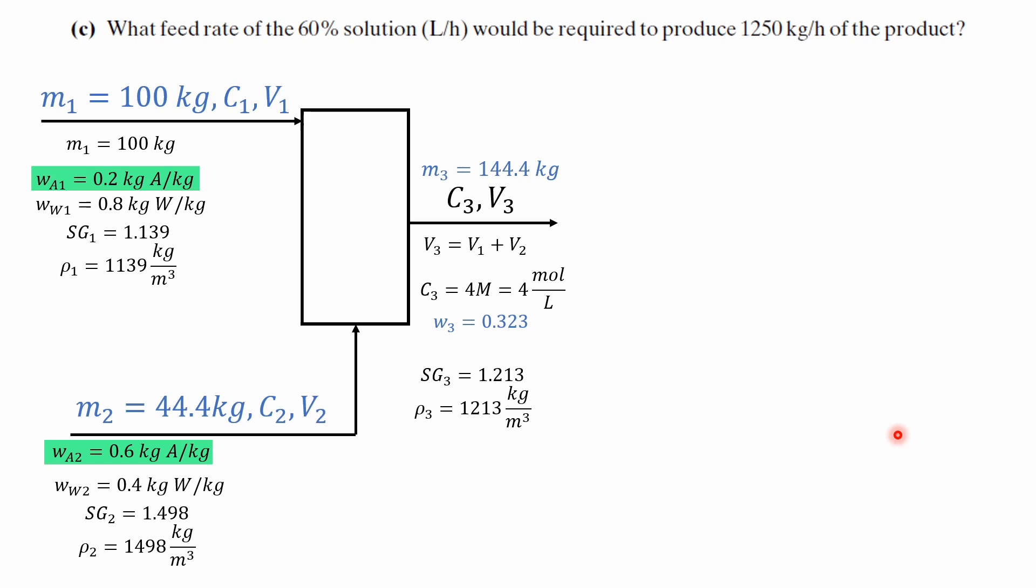Now the third question is to calculate the feed rate that would be required for stream 2 such that the product would be 1,250 kg per hour.